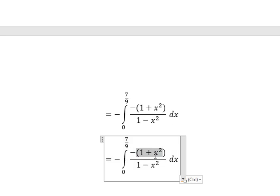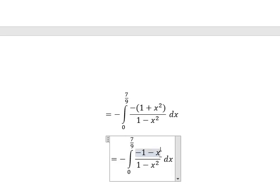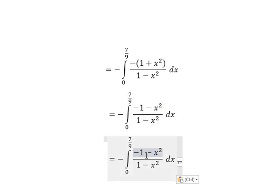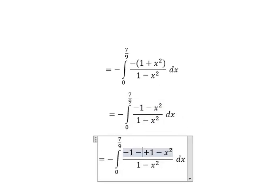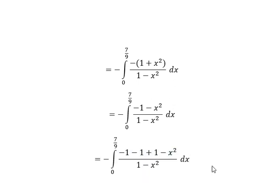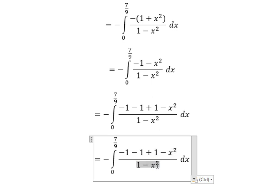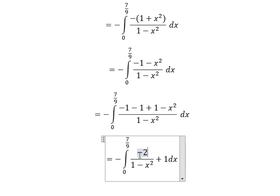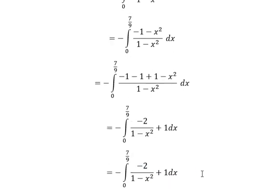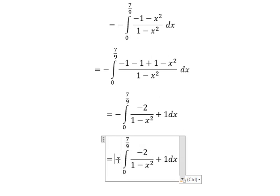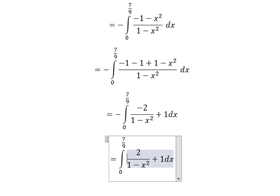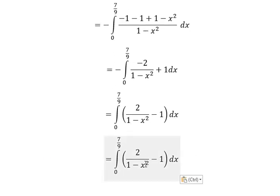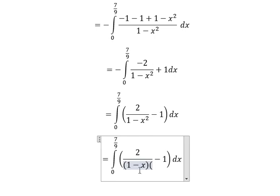Now we put a negative sign in here, which means we have another negative sign here as well. So we need to add number one, meaning we need to minus number one. One minus x² divided by one minus x² gives us one, and this one is negative two. The negative sign means we change the sign. Using identities, we put (1 - x) multiplied by (1 + x).